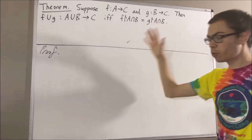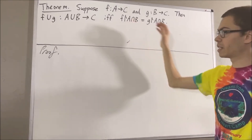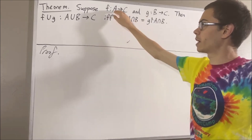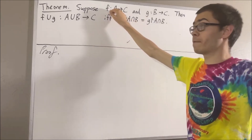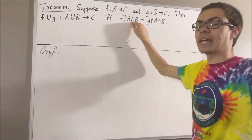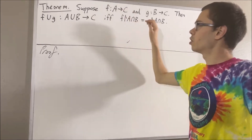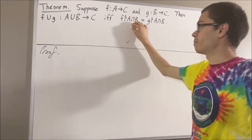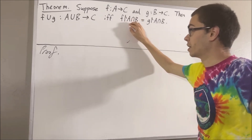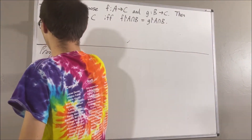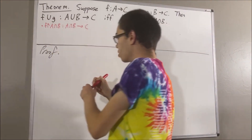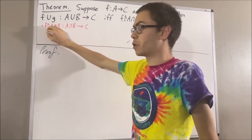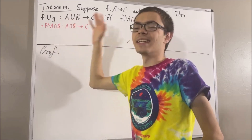Now, before we get into the proof, let's remind ourselves what the restriction of a function means. Since the intersection of A and B is a subset of A, restricting the domain of f to A∩B makes sense. The restriction of f to A∩B is a function from A∩B to C, and for all x in A∩B, the restriction of f to A∩B evaluated at x is equal to f of x.